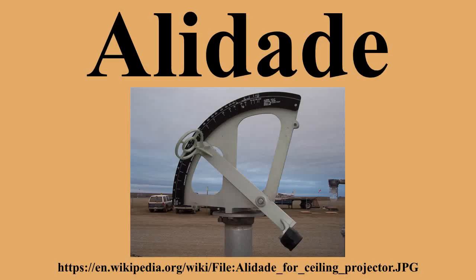An alidade, or a turning board, is a device that allows one to sight a distant object and use the line of sight to perform a task. This task can be, for example, to draw a line on a plane table in the direction of the object, or to measure the angle to the object from some reference point. Angles measured can be horizontal, vertical, or in any chosen plane. The alidade was originally a part of many types of scientific and astronomical instruments.